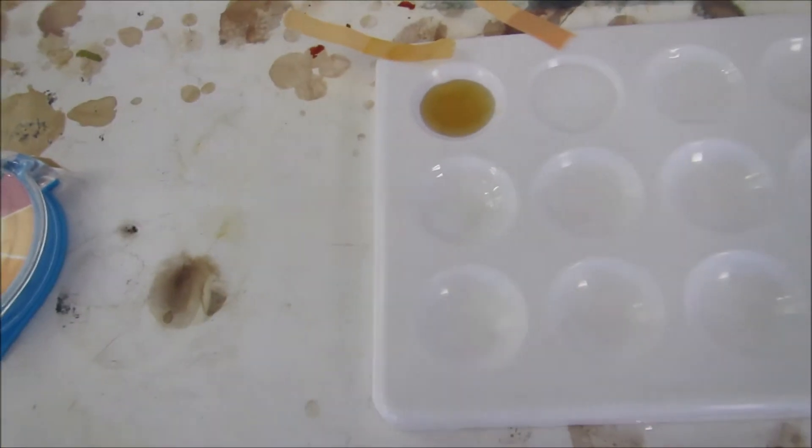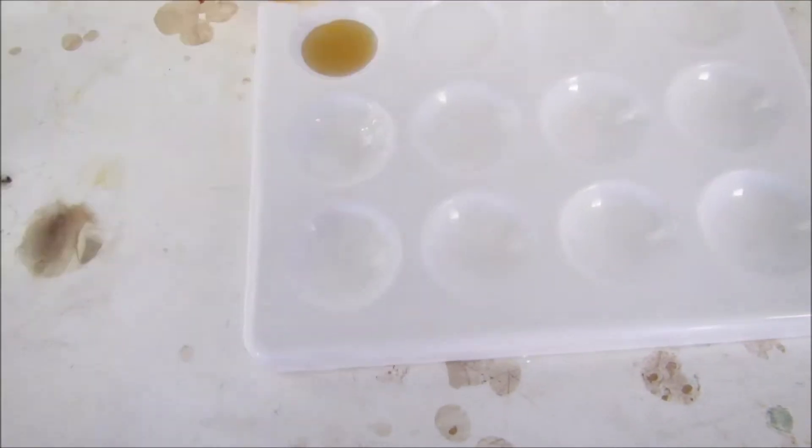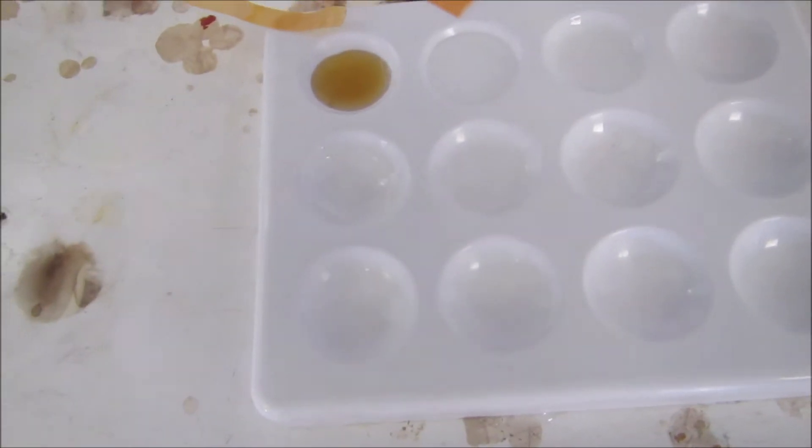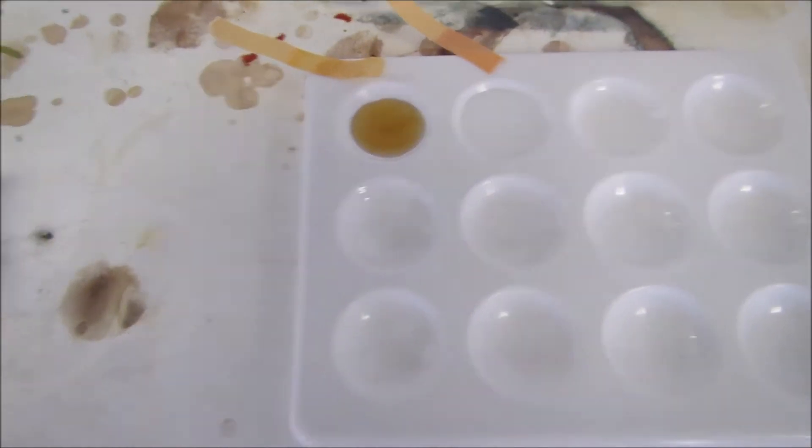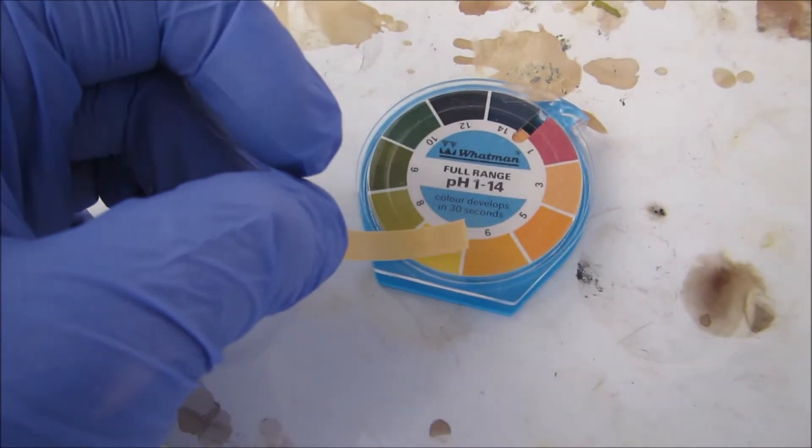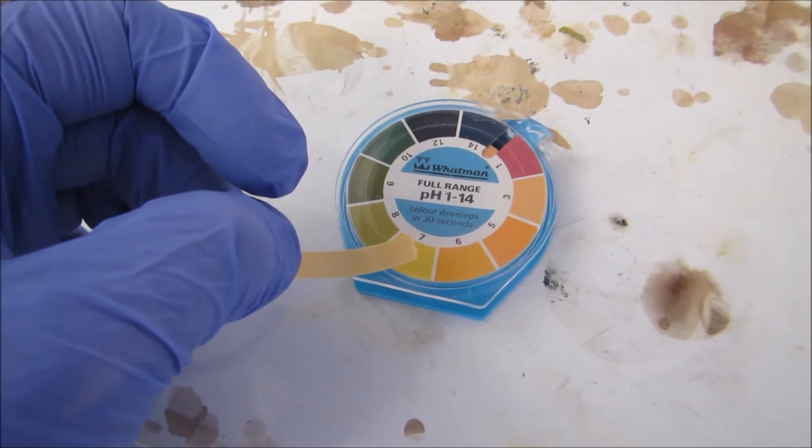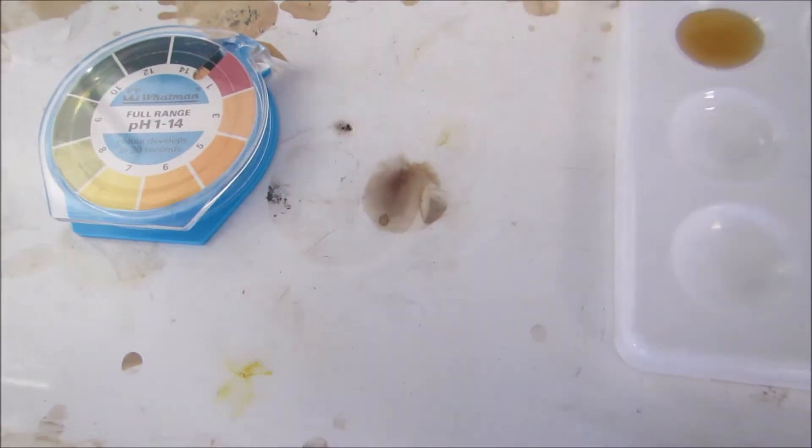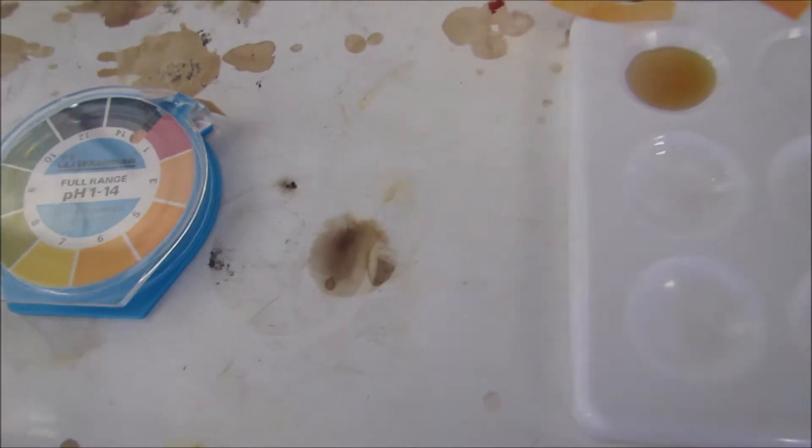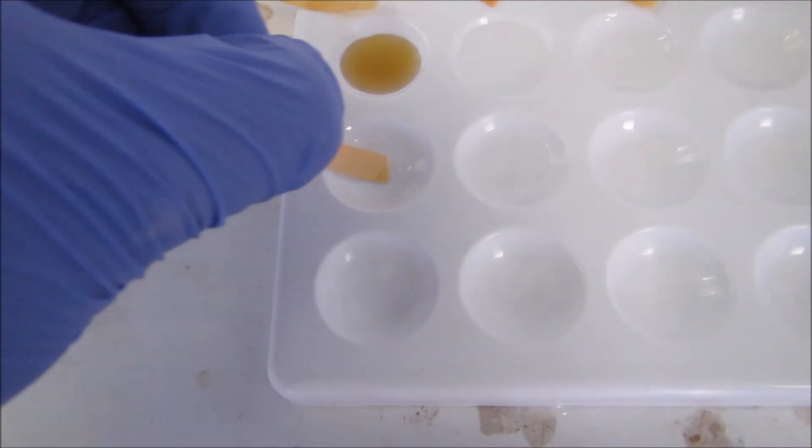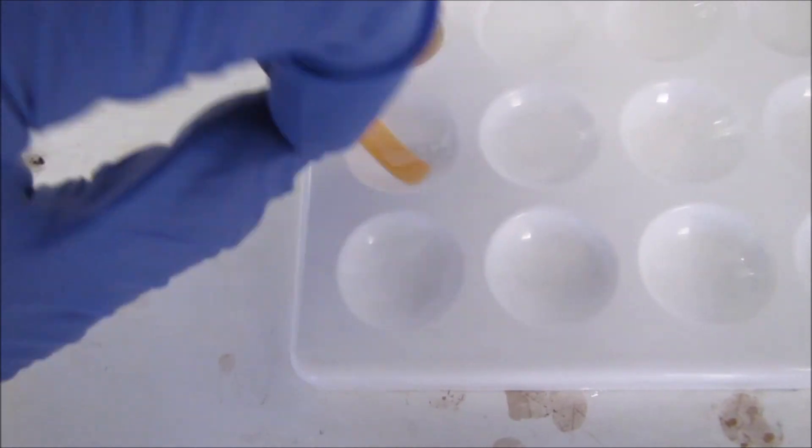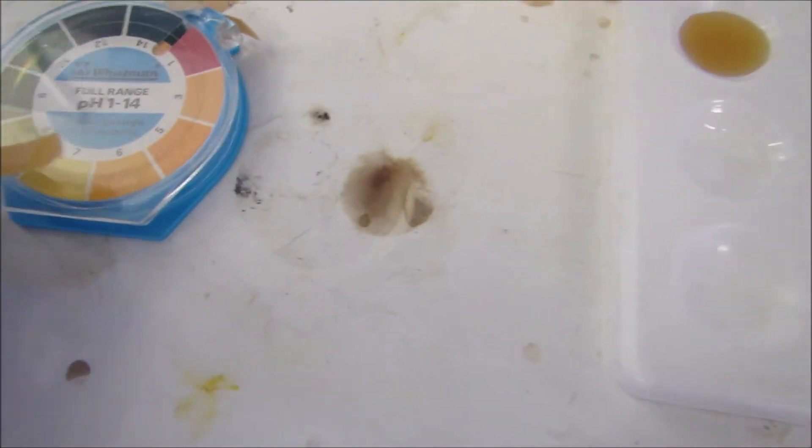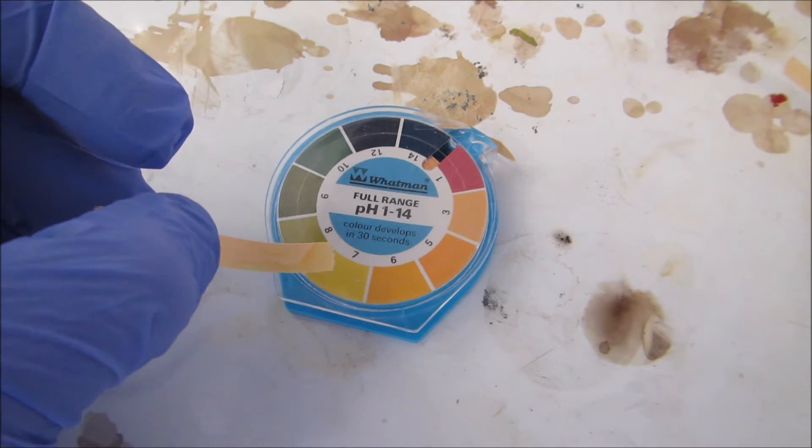The one after is our ketone. Our ketone is around pH 7, so neutral. Fourth one is our aldehyde and again it's coming out around neutral.